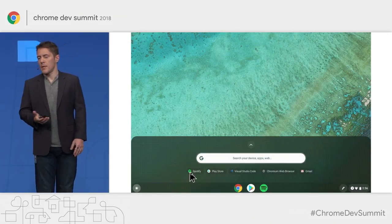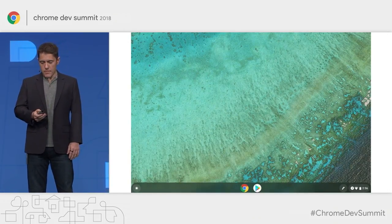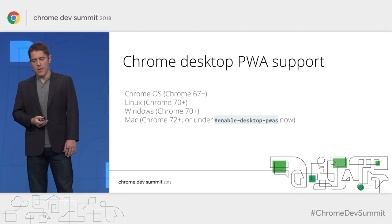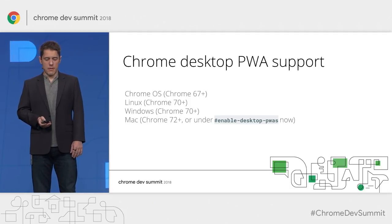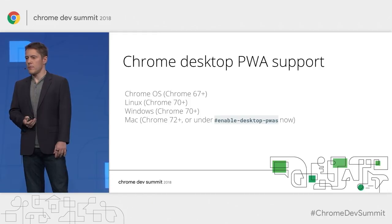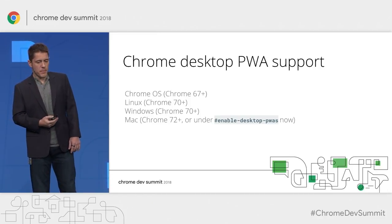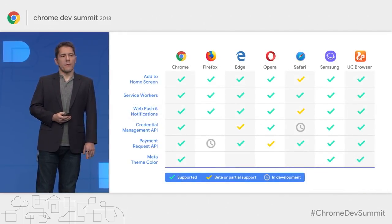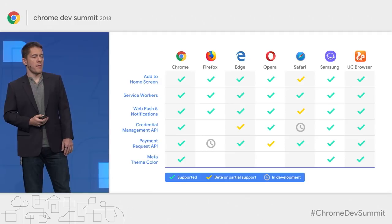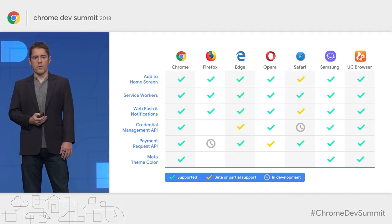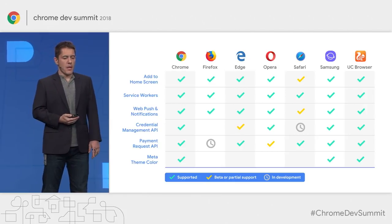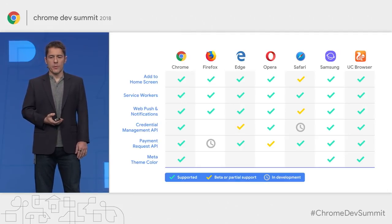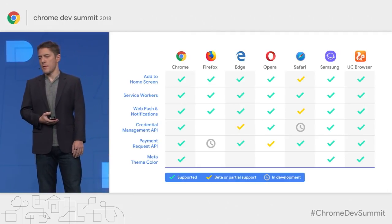These system-level integration features are provided by Chrome and are available on Chrome OS since Chrome 67. On Linux and Windows starting with Chrome 70, and on Mac with Chrome 72 — or you can check the Enable Desktop PWA flag for a sneak peek. This is thanks to Service Worker support, implemented by all major browsers. Advanced features like payment requests are in progress — Firefox is working on that, Edge has push notifications and add to home screen, and Safari is also working on authentication APIs.